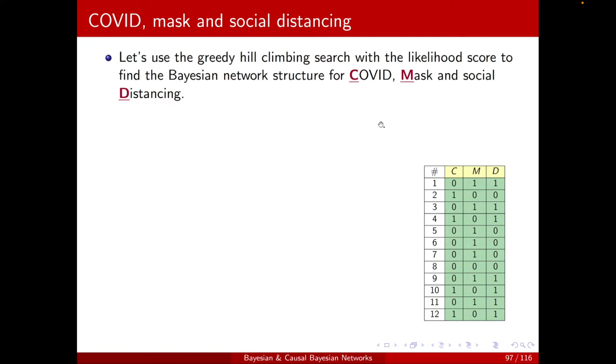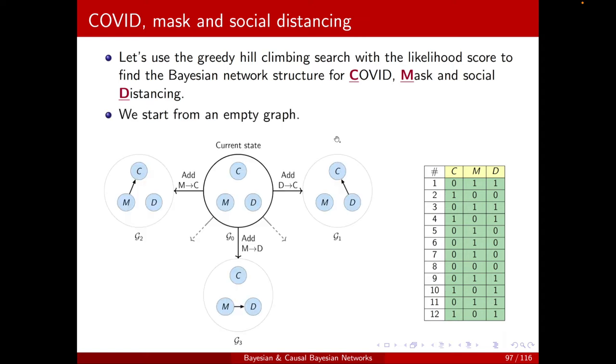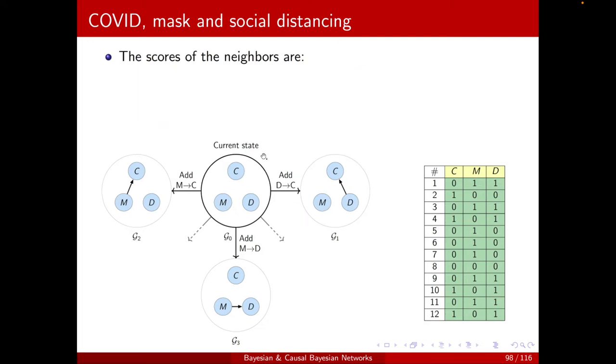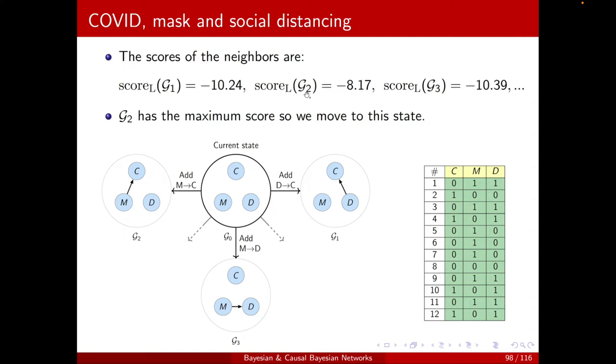Let's see the algorithm in practice. We want to obtain the optimal structure for the COVID mass social distancing problem using the likelihood score. We want to apply the greedy hill climbing. We have to start from some initial graph. Here we will start from the empty graph. And you can see that by doing any of these operations, I will get to a new neighbor, adding an edge. I'm not showing all of the neighbors just to make it simple. I'm only focusing on these three. So the next step is to calculate the score, the likelihood score for all of the neighbors. Here they are. And we can check that the G2 is obviously the maximum, and we can check that it's greater than the empty graph.